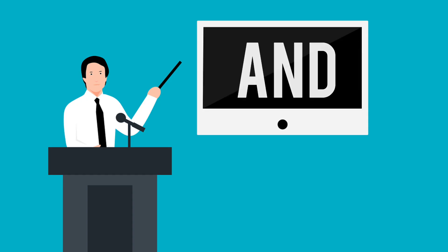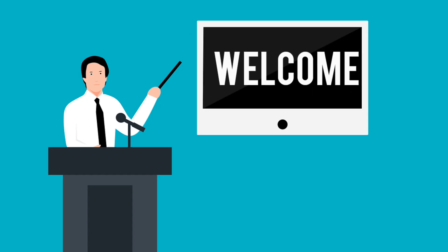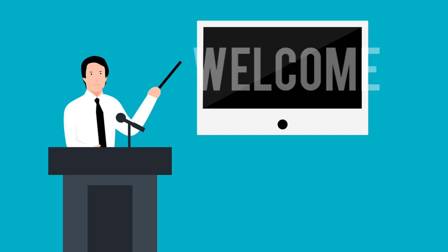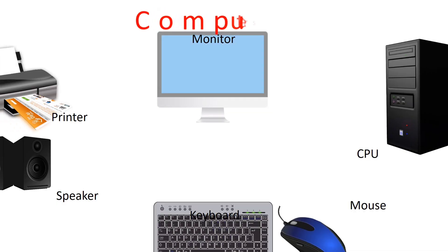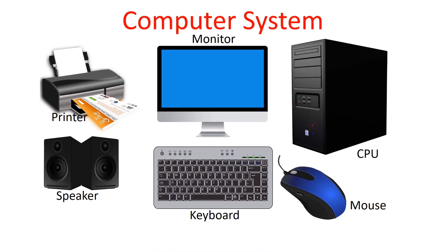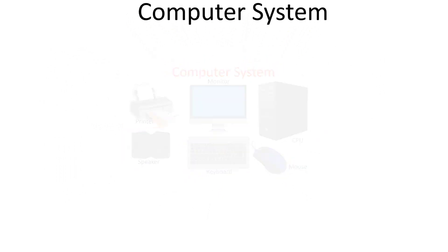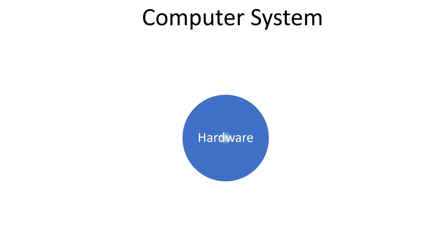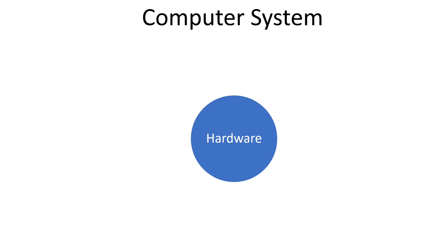Hello everyone, and welcome to this video where I am going to explain about computer systems. Here you will know what a computer system is and what are the components that make a complete computer system. A computer system is the combination of computer hardware and software.